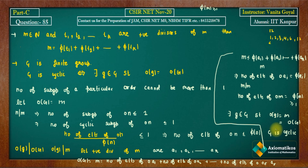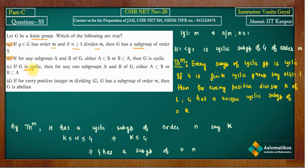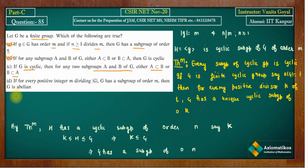Option C is the converse of B: if G is finite and cyclic, then for any two subgroups A and B, either A ⊆ B or B ⊆ A. Let's test this with a counterexample. Take G = Z6, which is a finite cyclic group of order 6.